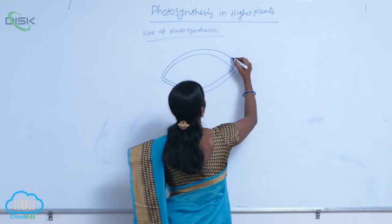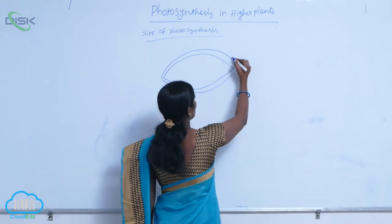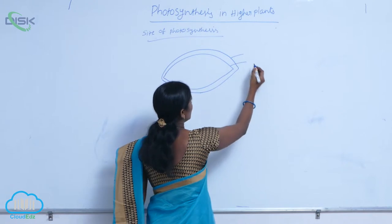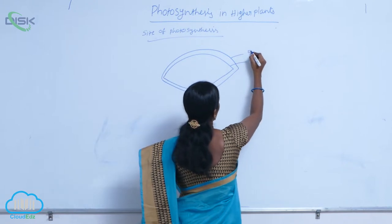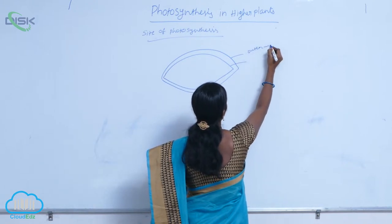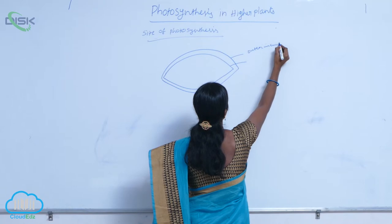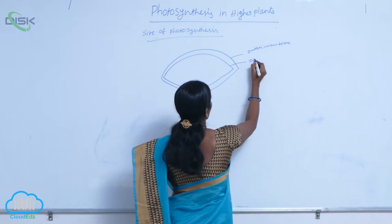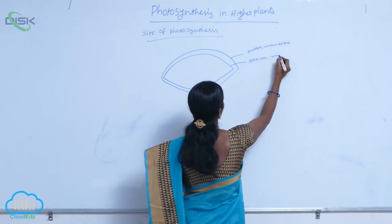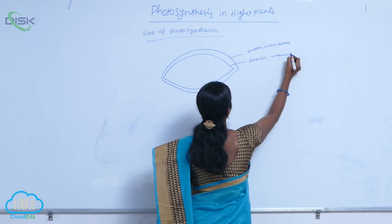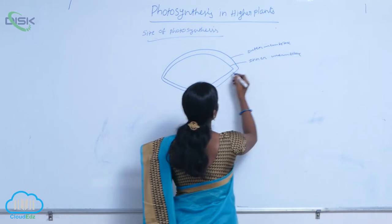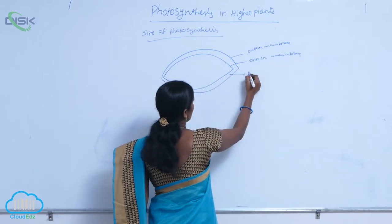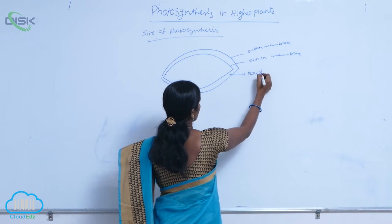The chloroplast is enveloped by two membranes: an outer membrane and an inner membrane. Between these two membranes, a space is present that is called the periplastidial space.